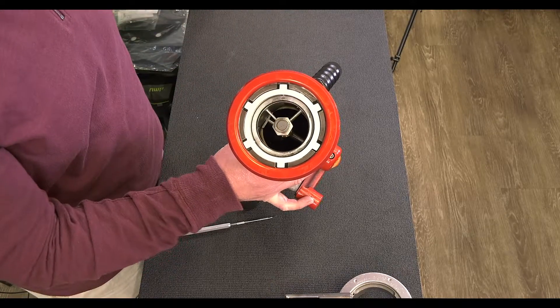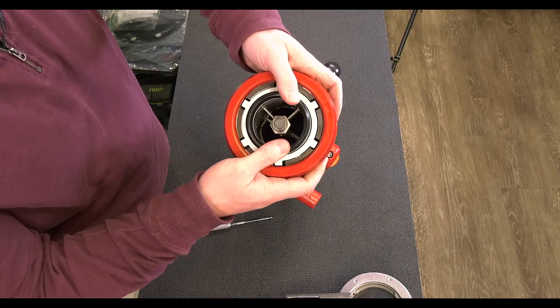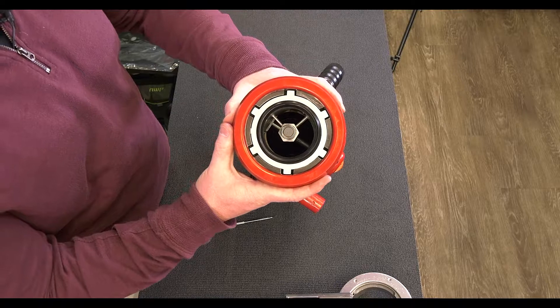Once our o-ring is installed, we can take our nose seal and seat it into the nozzle. Be careful to go in straight so that you do not pinch the o-ring.